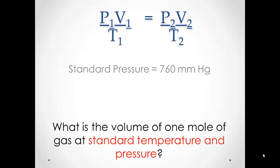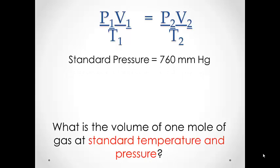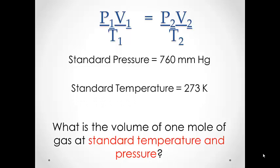Since we measured our pressure in millimeters of mercury, we can use 760 millimeters of mercury as our standard pressure. Standard temperature is zero degrees Celsius, but remember that when we are dealing with proportions, we need to convert our temperatures to Kelvin. So we use 273 Kelvin as our standard temperature.